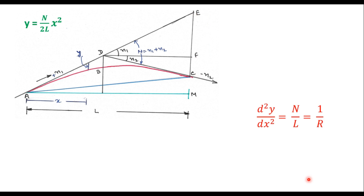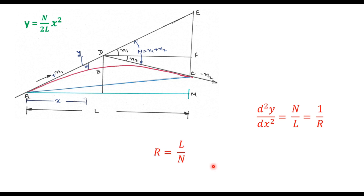This yields the equation of the parabolic curve: y = (N / 2L) · x². Differentiating twice gives d²y/dx² = N/L, which is the curvature and equals the inverse of the radius, giving R = L/N. Here, N is known since N = n1 + n2. The only parameter to determine is the length of the curve L.